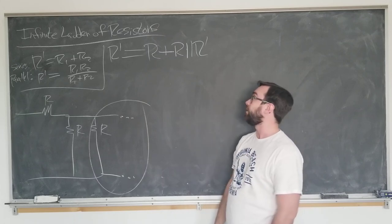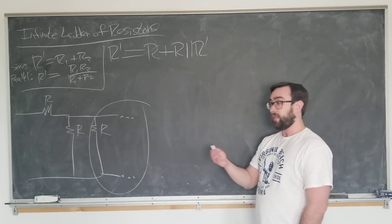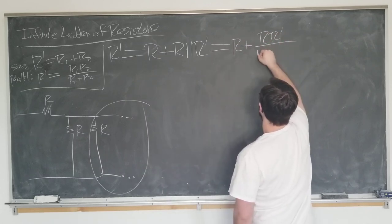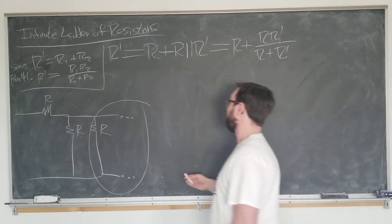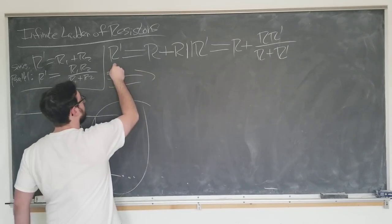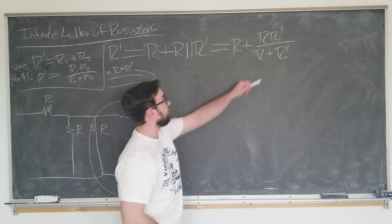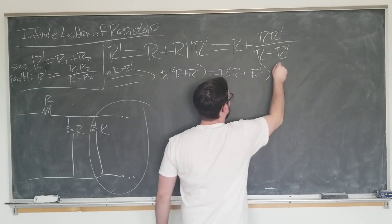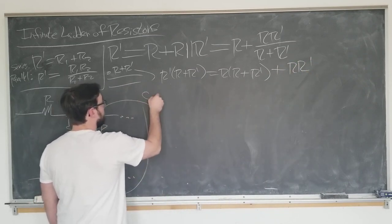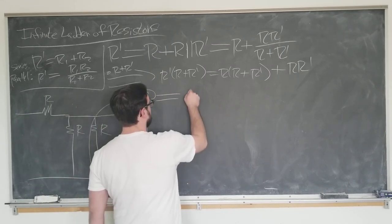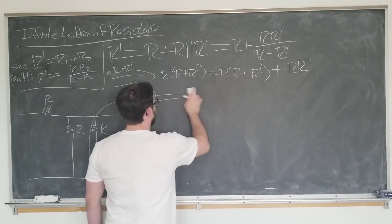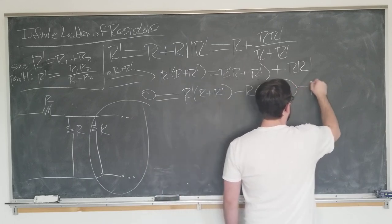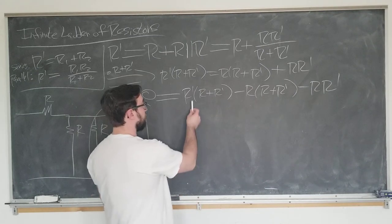So we have the equation R prime equals R plus R parallel R prime, which we will now write in terms of a quadratic that we can solve by using the rules that we learned. So we have R plus R R prime over R plus R prime. Let's get rid of this denominator here. So we have R prime times R plus R prime equals R times R plus R prime plus R R prime.